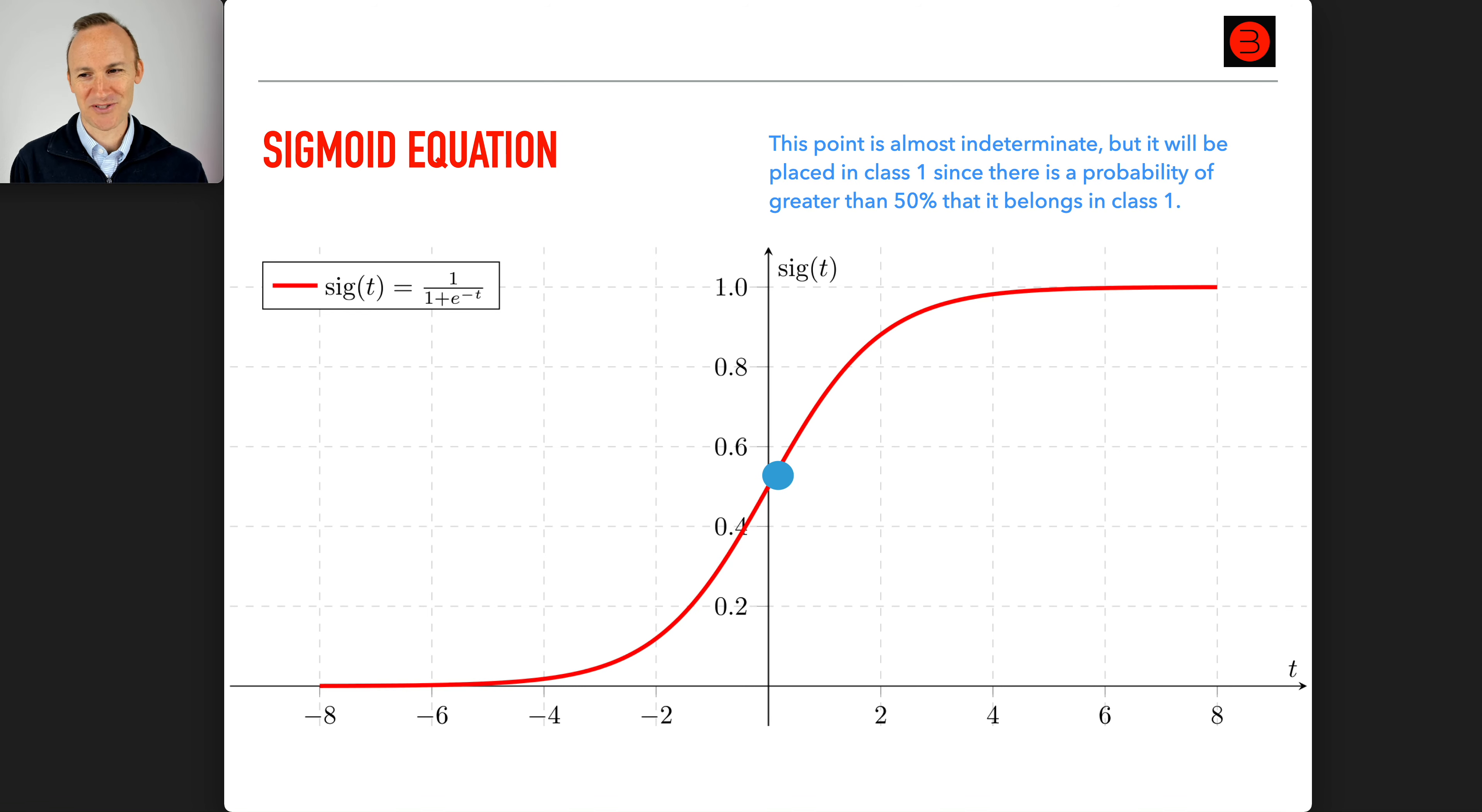This point is almost indeterminate, but it will be placed in class one since there's a probability of greater than 50% that it belongs in class one. If anything positive is going to one, anything negative is going to zero. If it's smack in the middle, I suppose you could go either way.